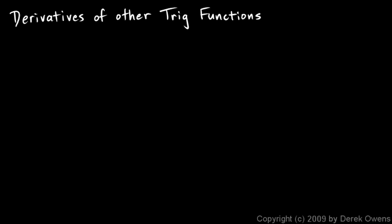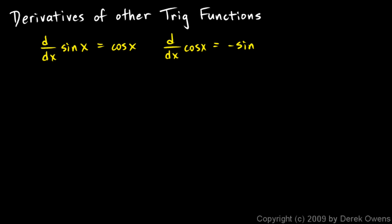We differentiated sine and cosine. Now we'll find the derivatives of tangent, cotangent, and secant and cosecant. It's pretty easy, but let's summarize real quick. The derivative of sine x is cosine x, and the derivative of cosine x is negative sine x.